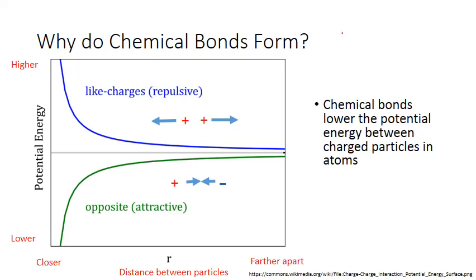The blue line represents the potential energy interactions between two like-charged particles, like two protons. When the protons are close together, they have a very high potential energy, because they're pushing each other farther apart. Like charges repel.